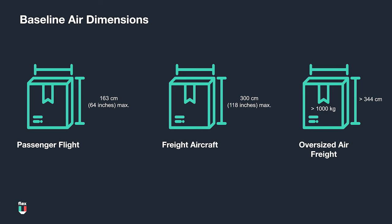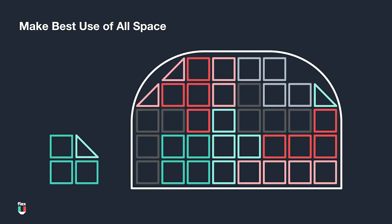Any piece over 344 cm long or over 1,000 kilos will be considered oversized and managed through a different loading procedure. Since air is so expensive, the key is to make use of every inch of space.